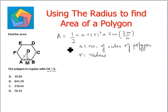Now, if you see in the given question n equals 6, let's count 1, 2, 3, 4, 5, 6 sides, and r is given to us as 9, that is OA.